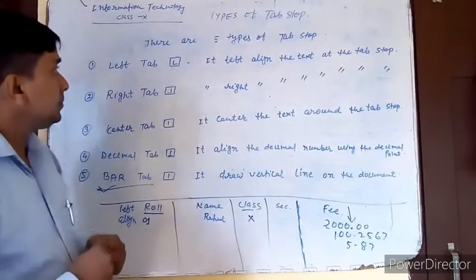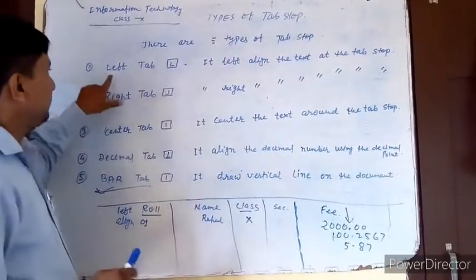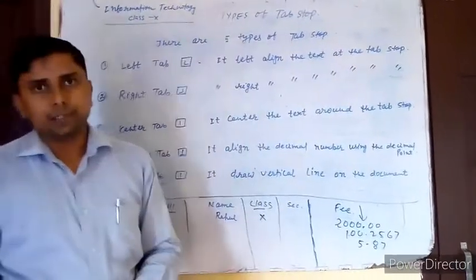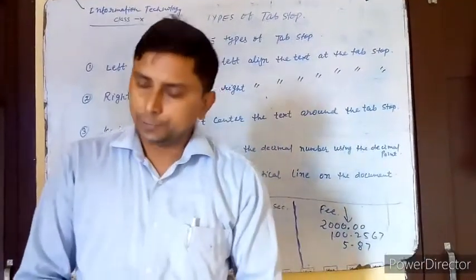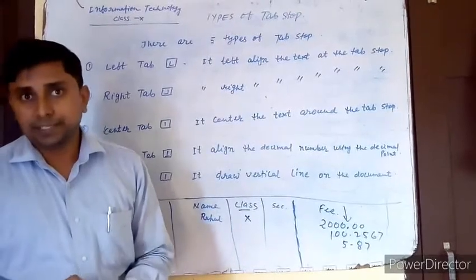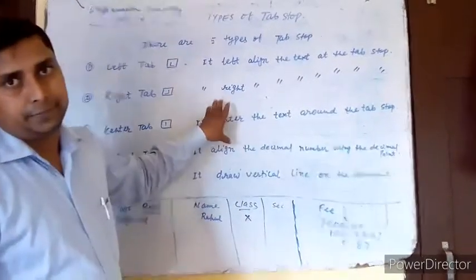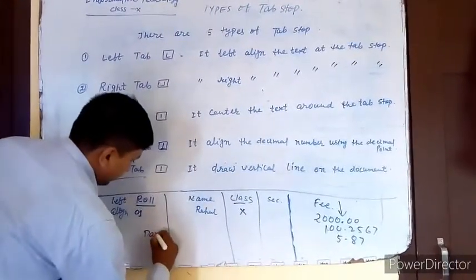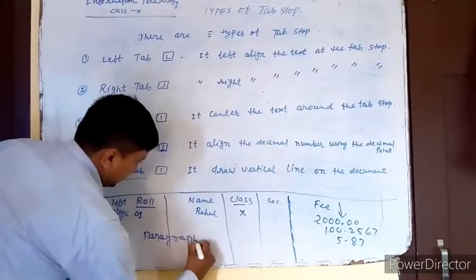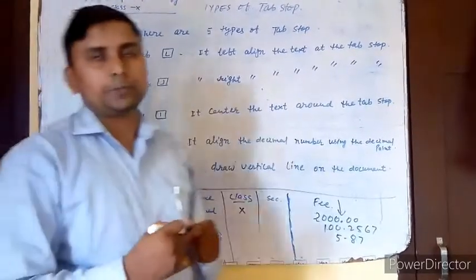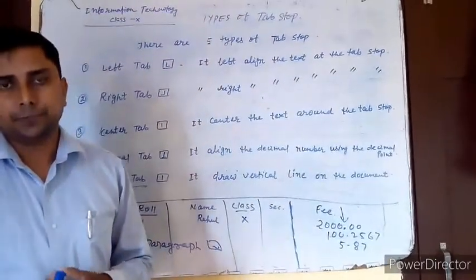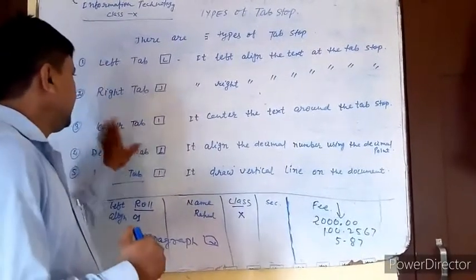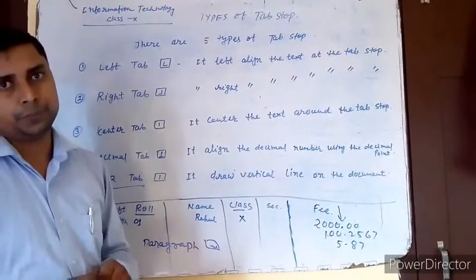So the types of tab stops are: left tab, right tab, center tab, decimal tab, and bar tab. Now, to implement tab stop keys, we can apply them using the ruler. We can also apply them through the paragraph settings — go to Home, then Paragraph, and click on the Tabs button. It will open a tab stops dialog box where you can set different left, right, center, decimal, and bar tabs according to your requirements.